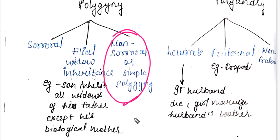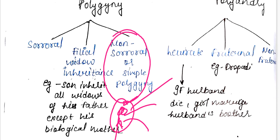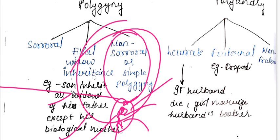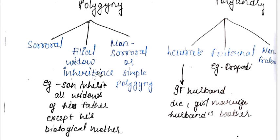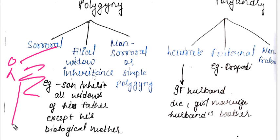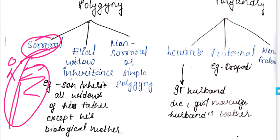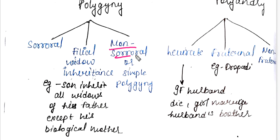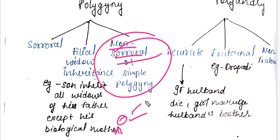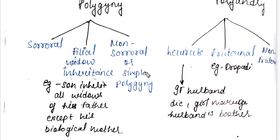Non-sororal simply polygyny: a king who married a lot of wives. If you have two children, one family will marry one family — you call it sororal. Non-sororal and simply polygyny means you marry many women, but it doesn't make sure that they are related children.